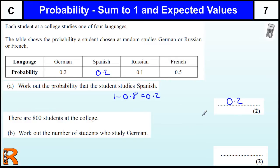Work out the number of students who study German. So we've got a 0.2 probability of studying German, there's 800 students. This is a very common way of working out a question.